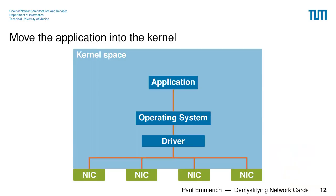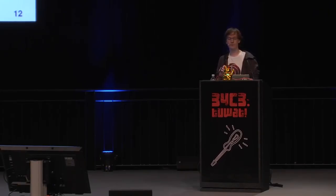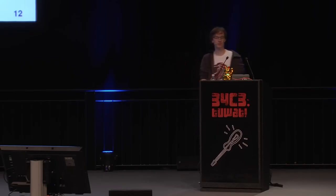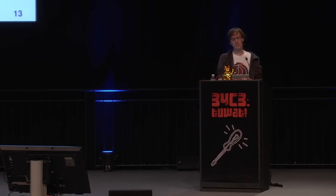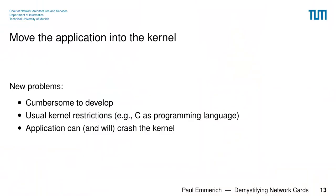So let's get rid of the boundary by moving the application into the kernel — rewrite it as a kernel module. You might think that's an incredibly stupid idea, but it's not that unreasonable. Examples include a certain Microsoft web server running as a kernel module, TLS offloading in the latest Linux kernel, and OpenResty's fast in-kernel cache. However, it comes with drawbacks: it's cumbersome to develop, most tools don't work as expected, you're restricted to C, and your application can and will crash the kernel.